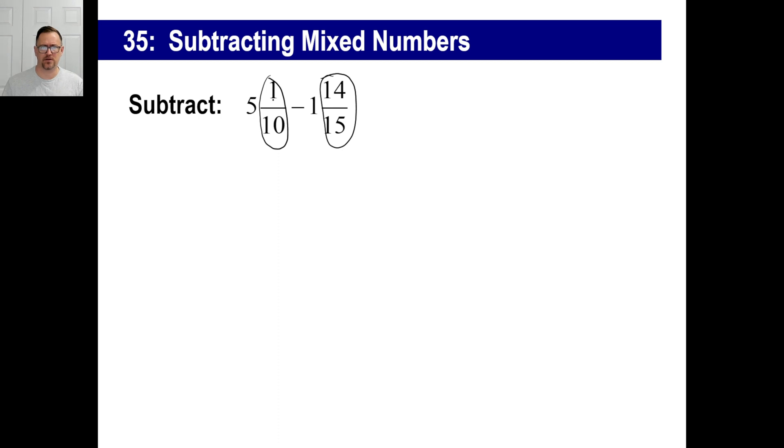If you look at this, you could go, that's a small fraction. That's not even close to being half. 14 fifteenths, that's more than half. So I can't subtract 14 fifteenths from one tenth. So what you're going to have to actually do is you're going to have to borrow one from this five. Make this into a four. Now, if you have tenths and you borrow one, that's the same thing as ten tenths, right? In other words, five is the same thing as four plus ten tenths.